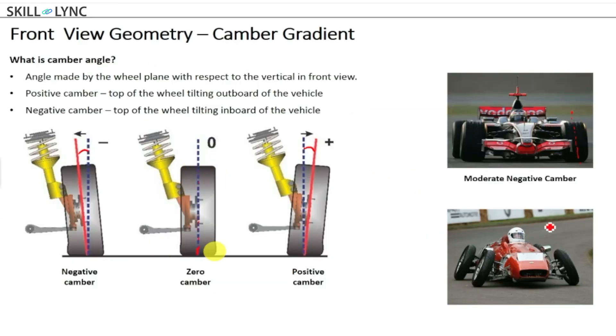The idea is when your wheel is actually resting on the ground and you look at the angle that's made by the wheel plane with respect to the vertical, then that is what you call as the camber angle.